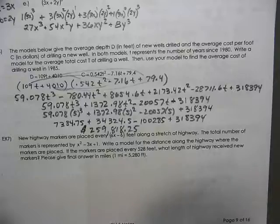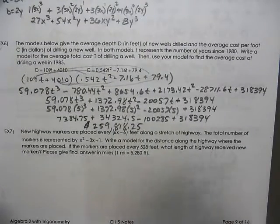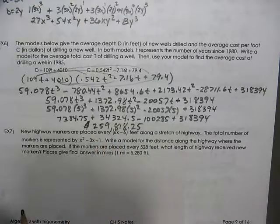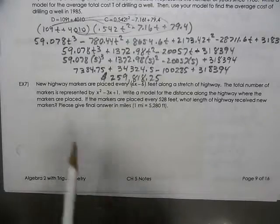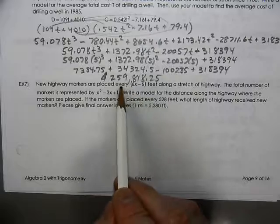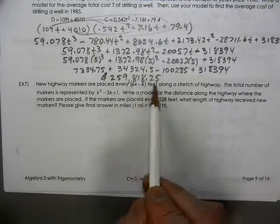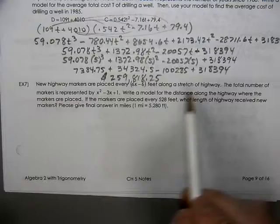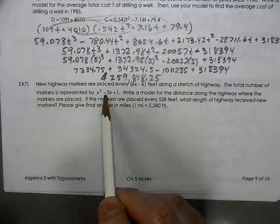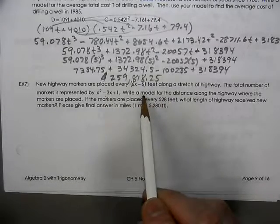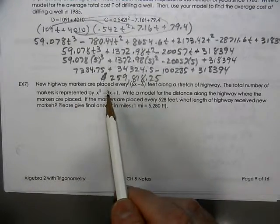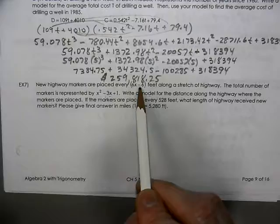This is quite the well. I assume this is not a residential well. Anyway, it's a lot of money to be drilling this well. Then we're going to be placing markers along the highway. New highway markers are placed every 6x minus 6 feet along a stretch of highway. So this is the distance in between each one. The total number of markers is going to be this guy. So we're going to write a model for the distance along the highway where the markers are placed.